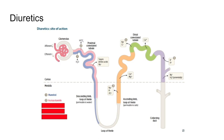Number three, which is increasing the amount of sodium, potassium, and chloride that is kept in the nephron and not absorbed — that is our loop diuretic. Number four, at the distal convoluted tubule, which is inhibiting the sodium chloride pump and keeping sodium and chloride in the nephron — that is our thiazide or thiazide-like diuretic.